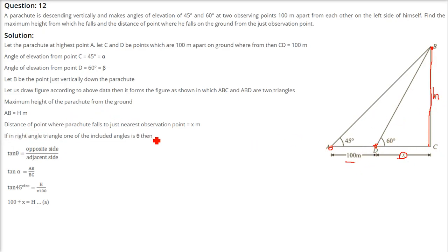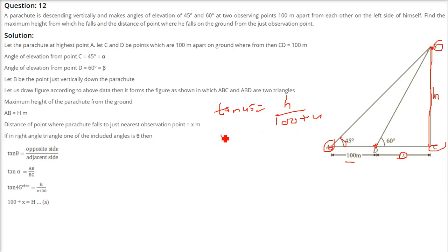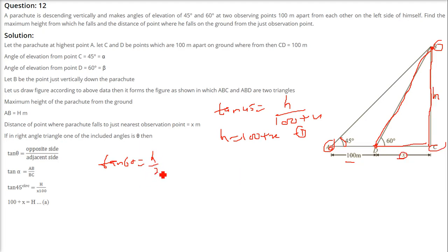We take triangle ABC with tan 45 as perpendicular over base: H divided by (100 plus X). Since tan 45 is 1, H equals 100 plus X — this is our first equation. For the second triangle BDC, tan 60 equals H divided by X. tan 60 is root 3, so H equals root 3 times X, meaning X equals H divided by root 3.